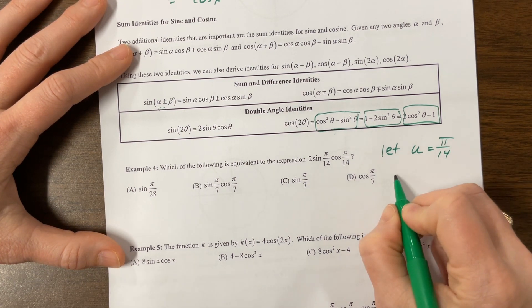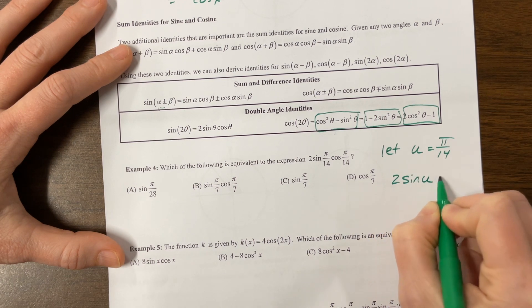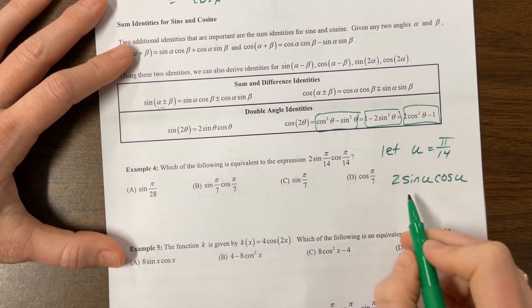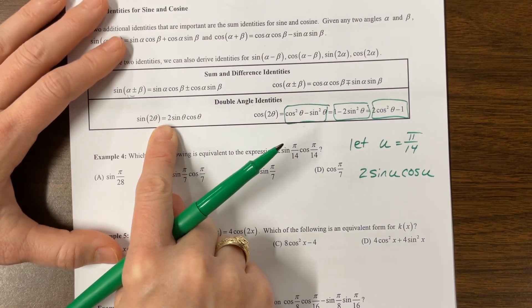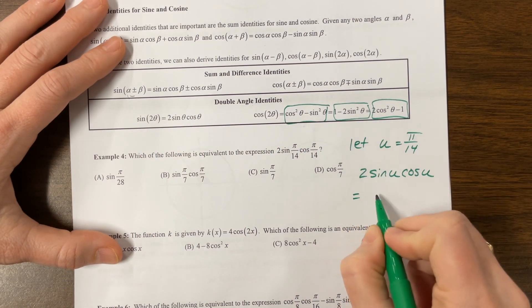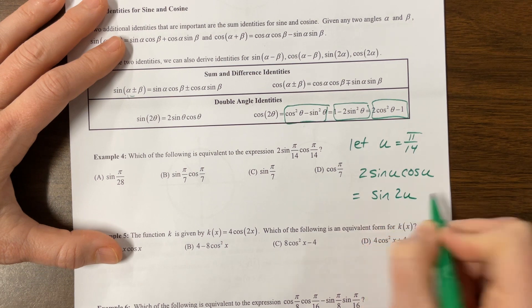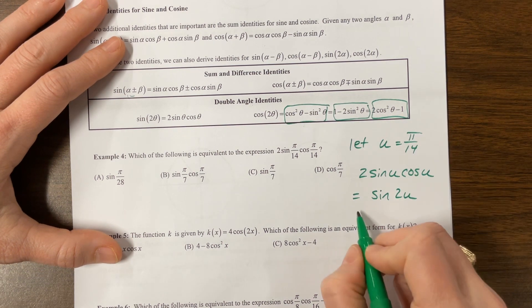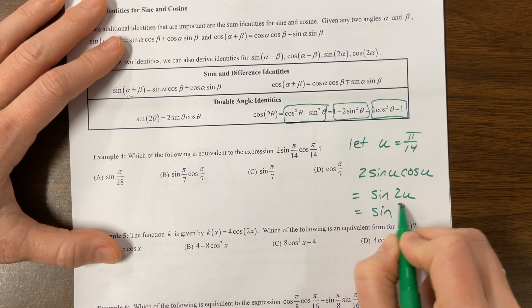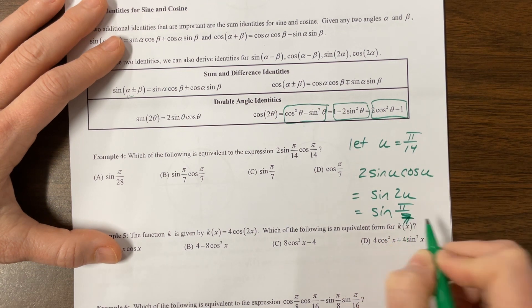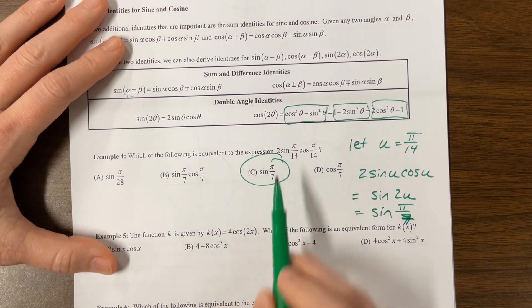And this is like saying two sine u cosine u, which is equal to this right over here. So I can come along and say, well, this would be equivalent to sine of 2u. Well, now I need to plug u back in, and this gives me sine of, well, 2 times PI over 14 is going to be PI over 7. That's a 7, pretend. So sine of PI over 7.